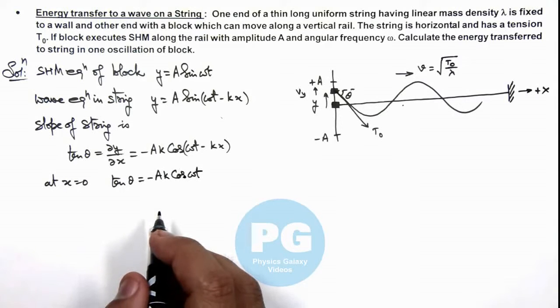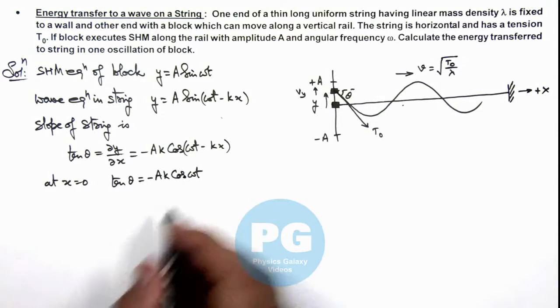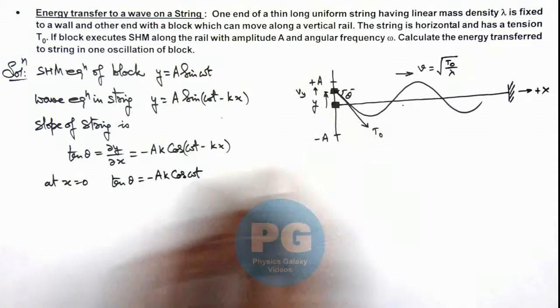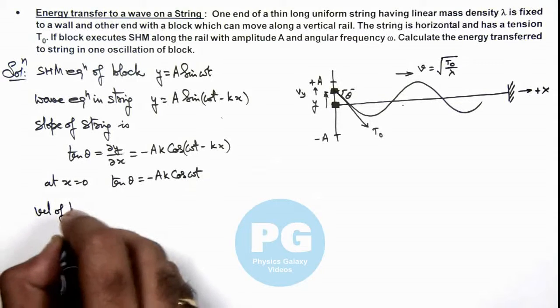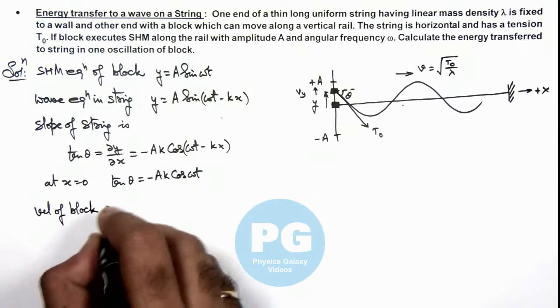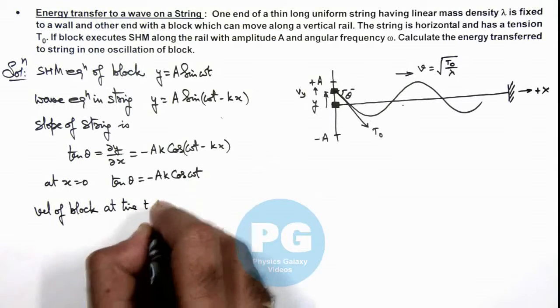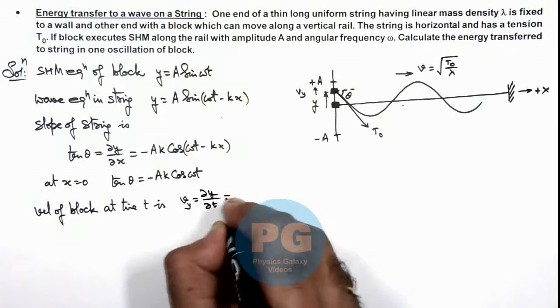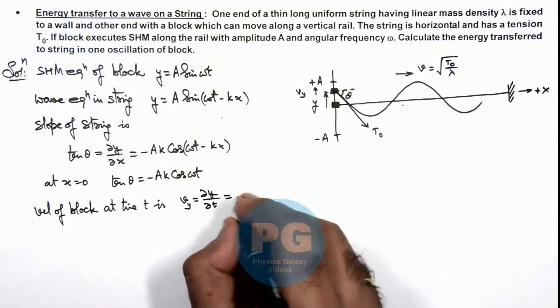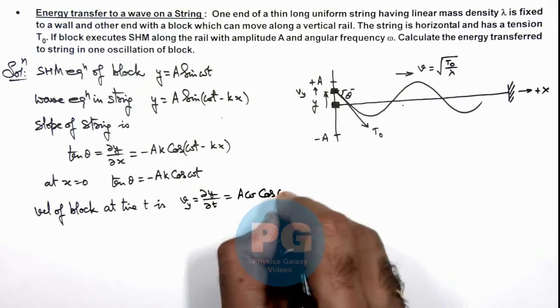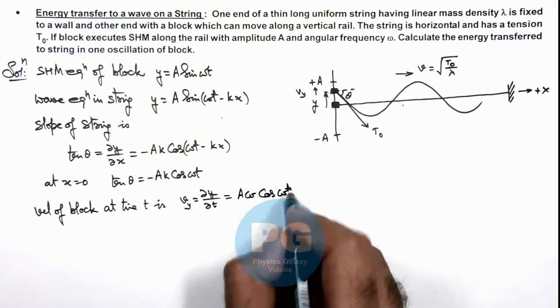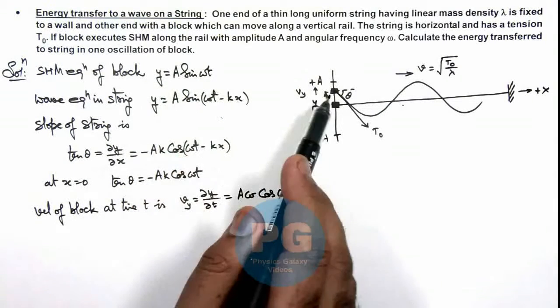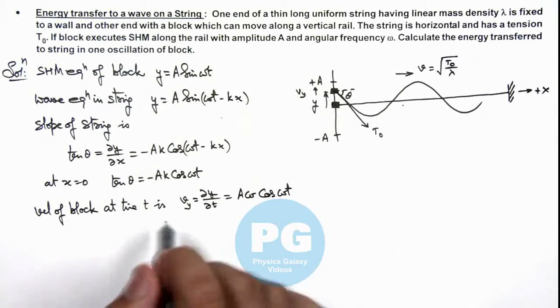If we calculate the velocity of this particle when it is at a distance y and at time t, the velocity of the block at time t is v_y. We can write as ∂y/∂t that is calculated by Aω cos(ωt) only, because we are calculating it at x = 0, or we simply differentiate the equation of SHM of the block.